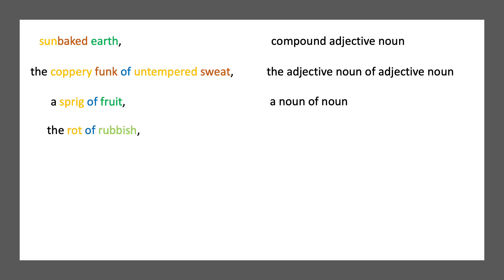Next, the structure repeats and includes the alliteration — the repetition of an initial sound — of rot and rubbish. These lines share the structure noun of noun, which heightens the contrast between what they describe: fruit and rubbish. How Agnes smells or perceives them also seems different. A sprig is a thing, a part of a plant, not its smell. And rot is really a process or a state — the one associated with smell — as are fruit and rubbish themselves. These complex sensory images are described in a regular rhythm.